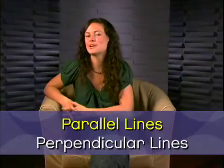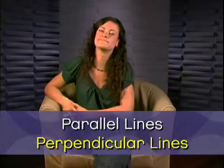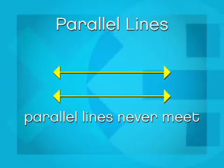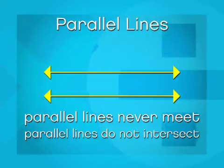Okay, time to mention two special pairs of lines, parallel lines and perpendicular lines. Parallel lines are two lines that never meet. They go on and on in opposite directions, but they will never touch each other. Parallel lines do not intersect.